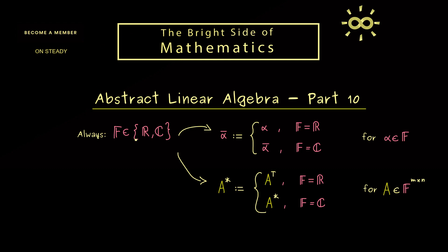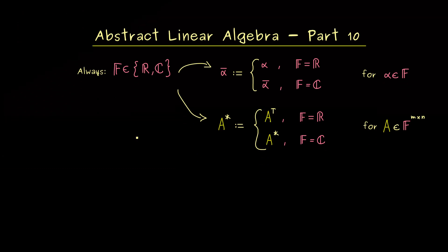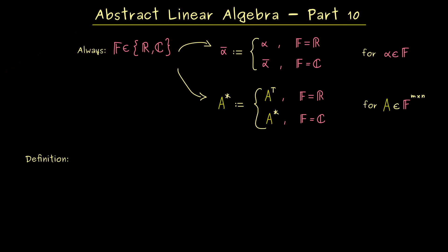With these notations cleared up we can give the definition of a general inner product. Hence, this definition will generalize the standard inner product we already know from R^n and C^n. And indeed we use the same common notation with the pointed brackets. So you see, we have a map with two inputs, so the domain of definition is the Cartesian product V times V. And as always V stands for an F-vector space. But the codomain of an inner product is always the field of scalars.